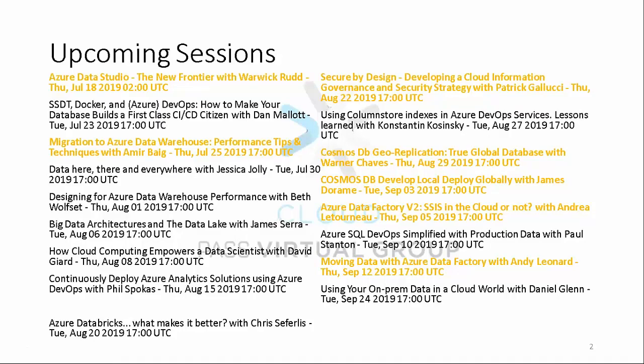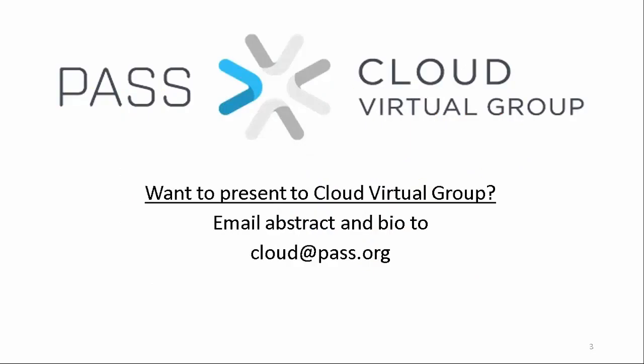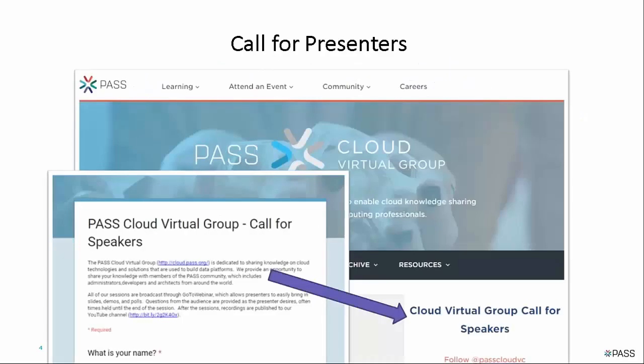We do have a number of upcoming sessions — currently 19 or 16 future presentations are booked. The ones in orange are the most recently added. The one coming up this Thursday is at a different time than typical: 2 a.m. UTC, which is about 9 p.m. Central Time, and our presenter is Warwick from Australia. If you are interested in presenting, email us at cloud@pass.org or go to the call for presenters link on cloud.pass.org.